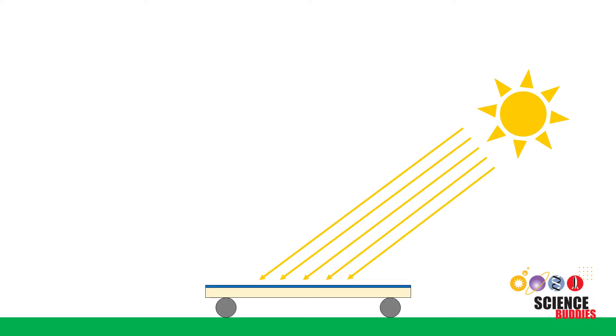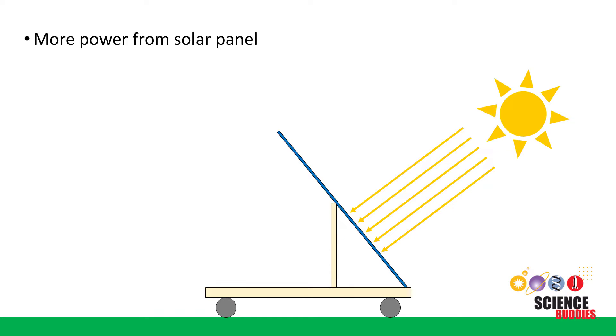To get the most power in this case, the solar panel would need to be tilted towards the sun. However, this could introduce other problems, like making the car more top-heavy or increasing air resistance and making the car more vulnerable to gusts of wind. This is a design decision you will have to make when building your car.